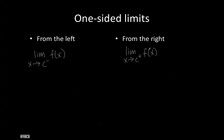An interesting property about one-sided limits is that the two-sided limit — where the values of x are approaching c from both sides — exists if and only if the limit as x approaches c from the left side equals the limit as x approaches c from the right side.